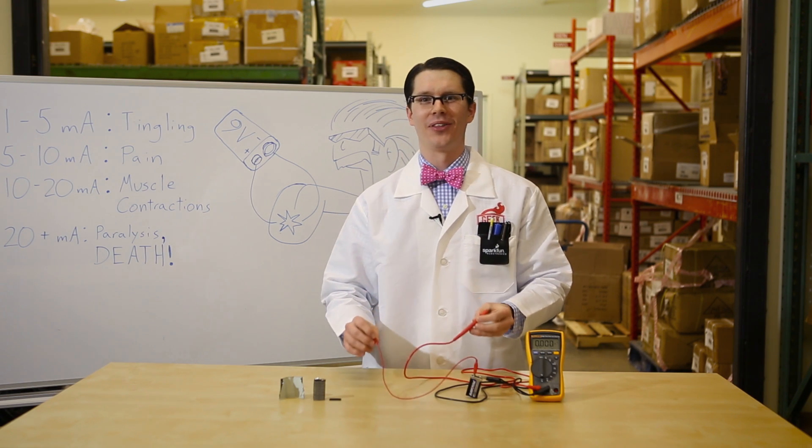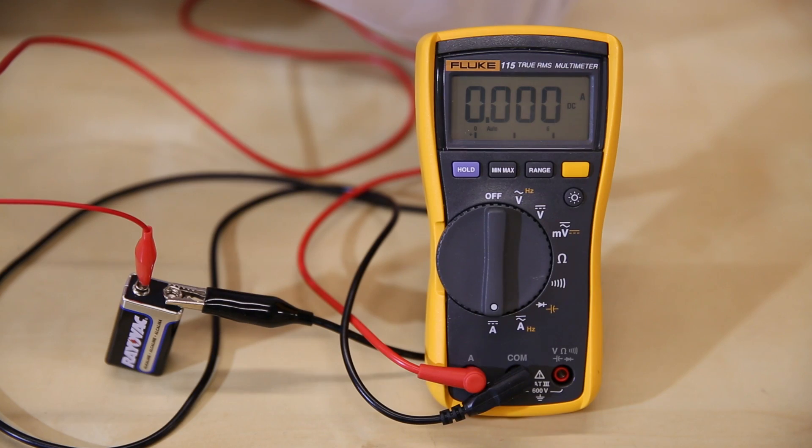Oh, the things I do for science. As you can see on the meter, we read about 1-2 milliamps of current, which is exactly what we predicted.